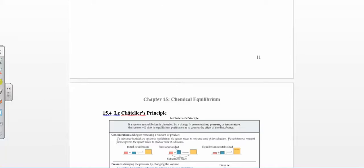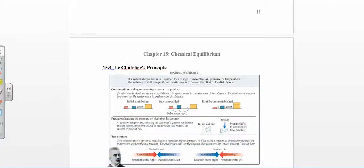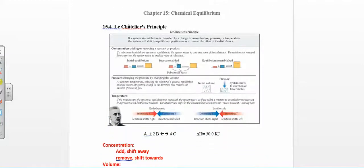So let's look at 15.4, which is Le Chatelier's principle. What's happening here is you're disturbing the system in some way. You're either changing the concentration of your reactants or products — you can increase or decrease the concentration. You're changing pressure or you're changing temperature, and each one of those changes disturbs the equilibrium. It's going to want to shift in one direction or another, either towards the reactants or towards the products. And sometimes you can change something and it doesn't affect the equilibrium at all — so we'll say there's no shift.